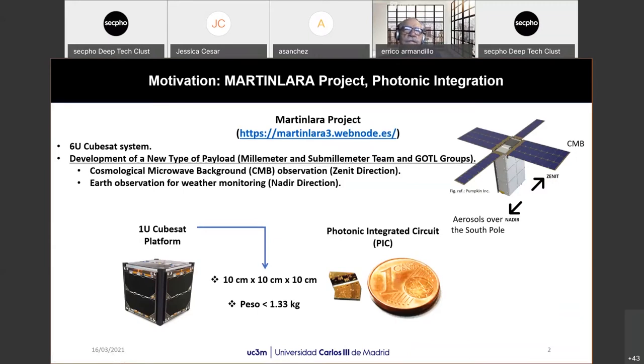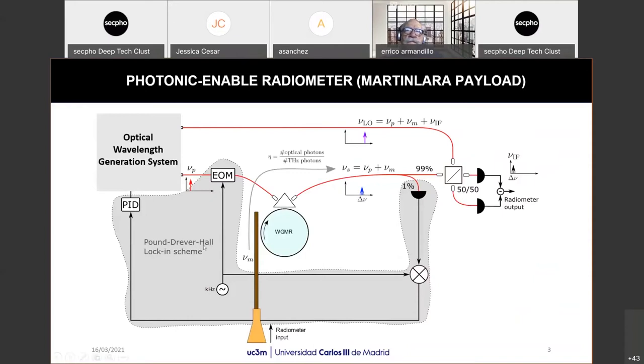And by means of our conversion mechanisms, these cryogenic systems, a requirement can be eliminated from the system, from the payload. So this is the scheme of our photonic radiometer, which is the payload of our Martin Lara project. The operation principle behind this system is the following. An optical carrier, can you see my pointer? I hope so.